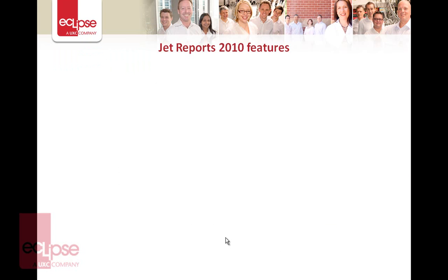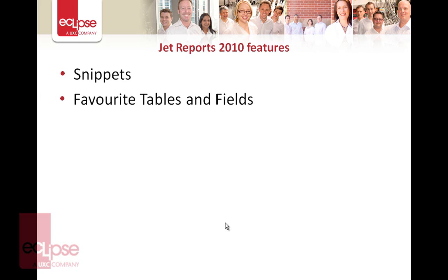The new features in Jet Reports 2010 include a feature called Snippets, which is an area where you can save bits of code or other parts of Jet Reports that you may have developed yourself. Things like dates and similar items you can keep in Snippets and share. It also has Favourites — tables and fields that you can mark as your favourites so you don't have as many to filter through when developing a new report.